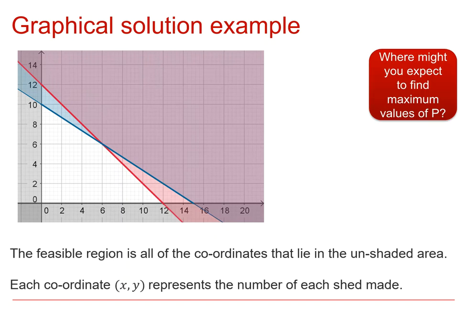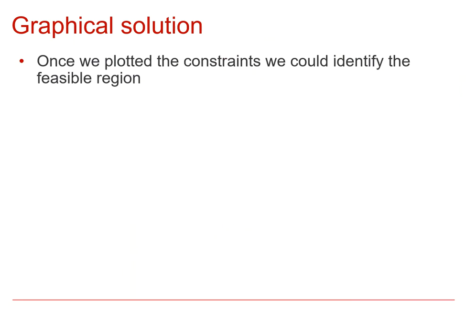And in the vertex method that we saw, we realized that it would have to be at one of the vertices, so here, here, here, or here, that gave us four values to test, four positions to test, and we picked the one with the highest value of P.